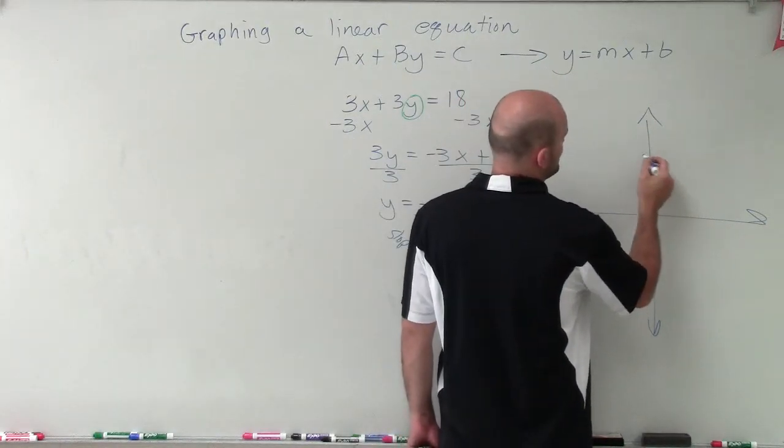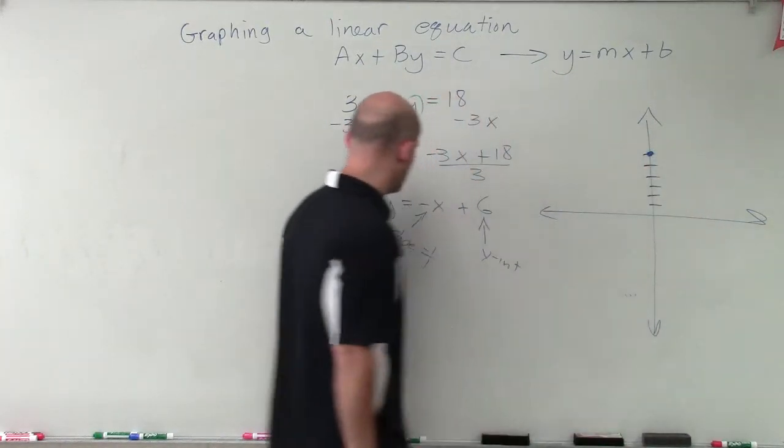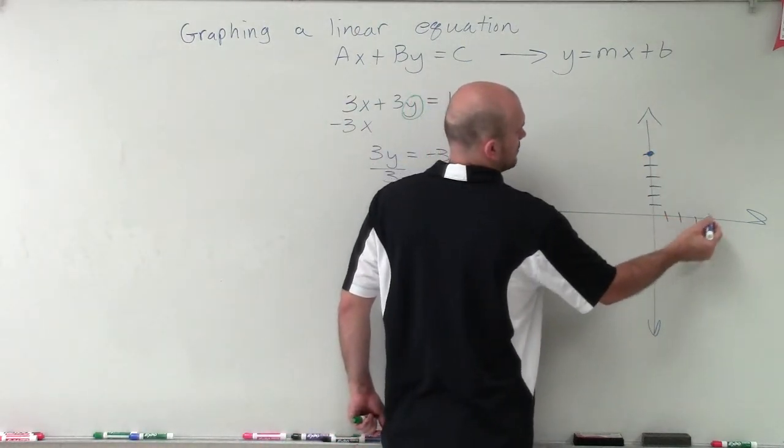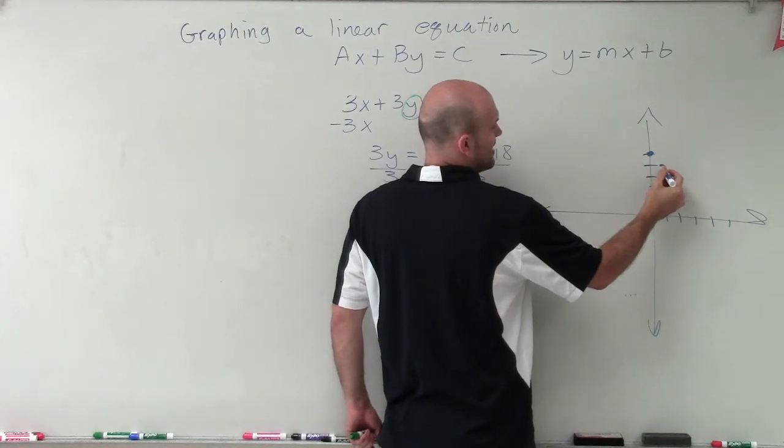1, 2, 3, 4, 5, 6. Make a nice big dot. And then follow my slope—my change in y is negative 1 and change in x is positive 1.